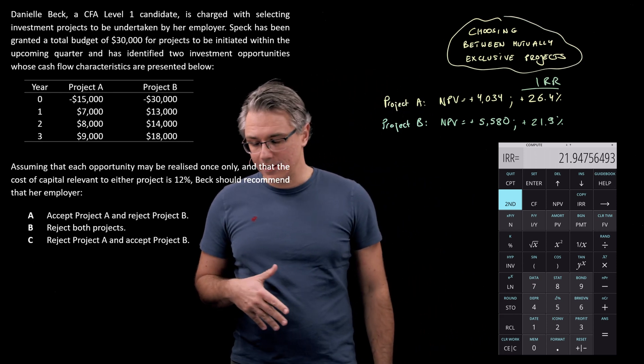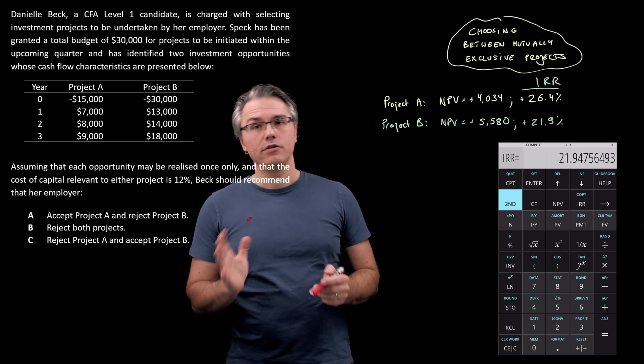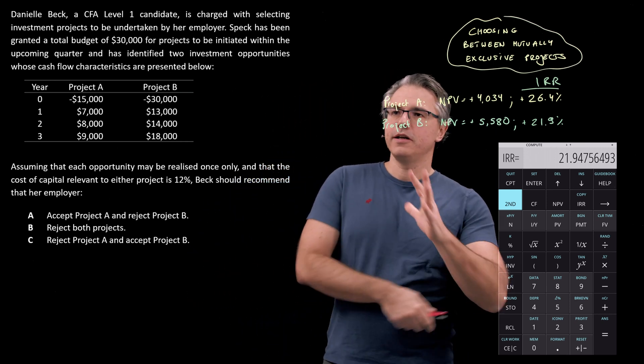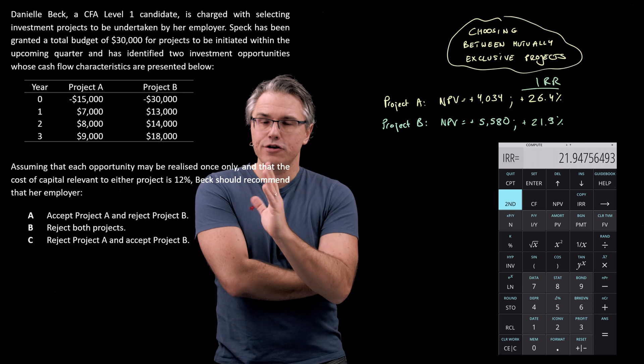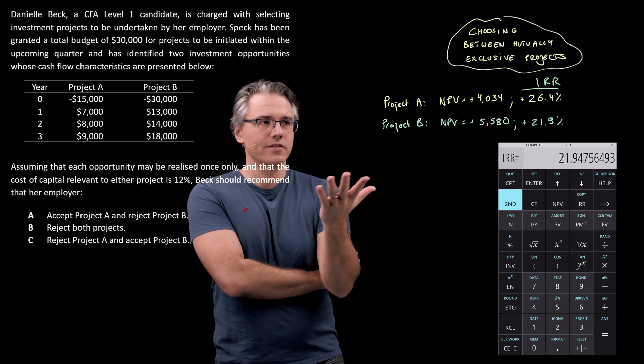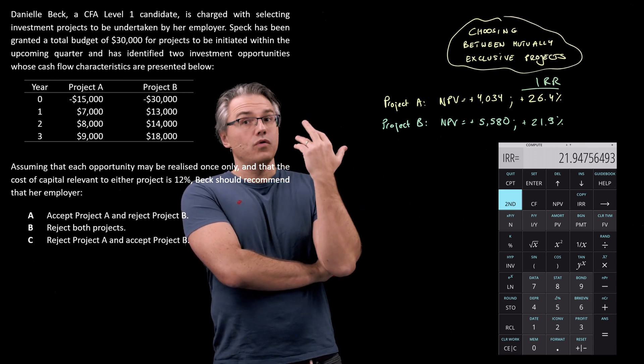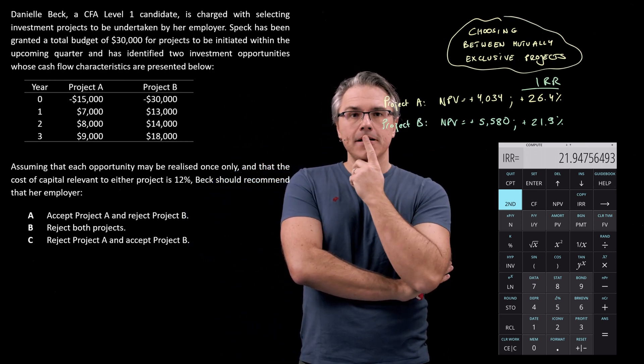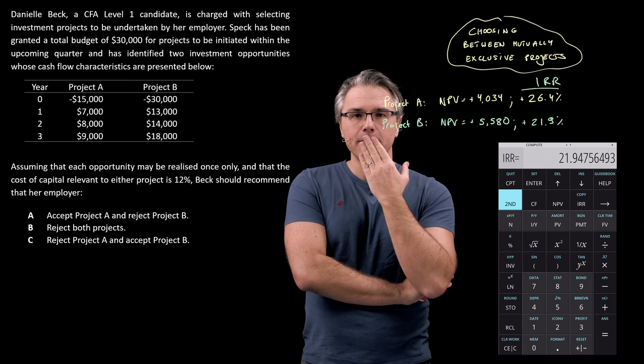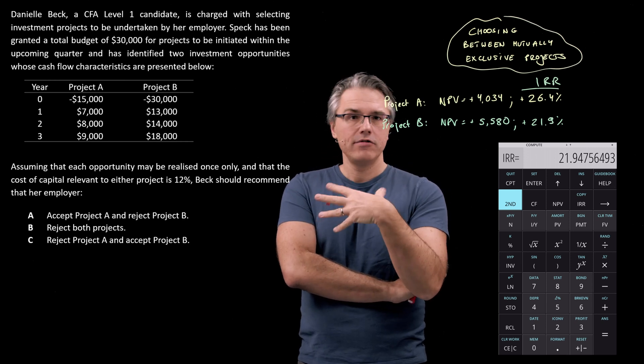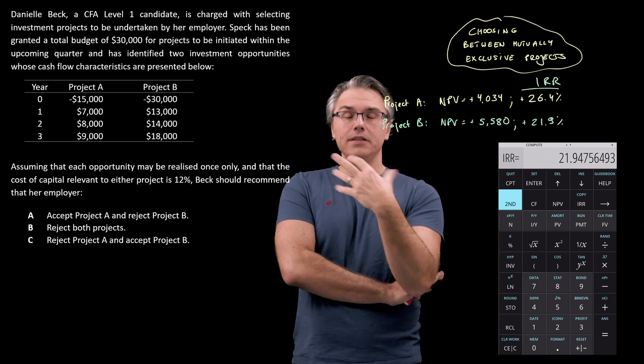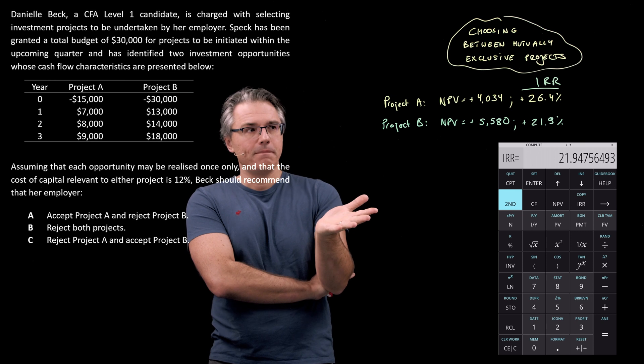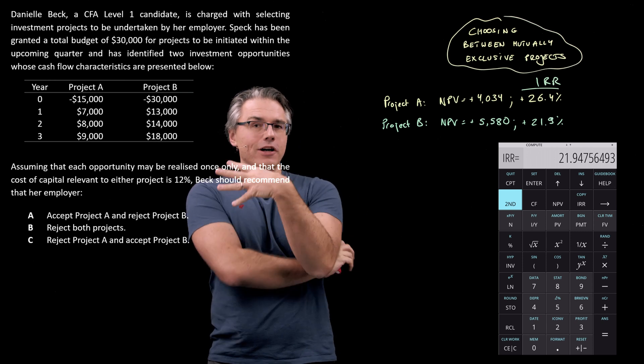Okay, so how do we now make decisions with regard to what we should be accepting, what we should be rejecting? If both these projects could be done, if there was no limitation in terms of budget for example, you would basically want to do both projects because both of them add value to the company. We were told that each one can only be done once, so they can't be duplicated, multiplied in any way. And if you had the budget, do both of them.